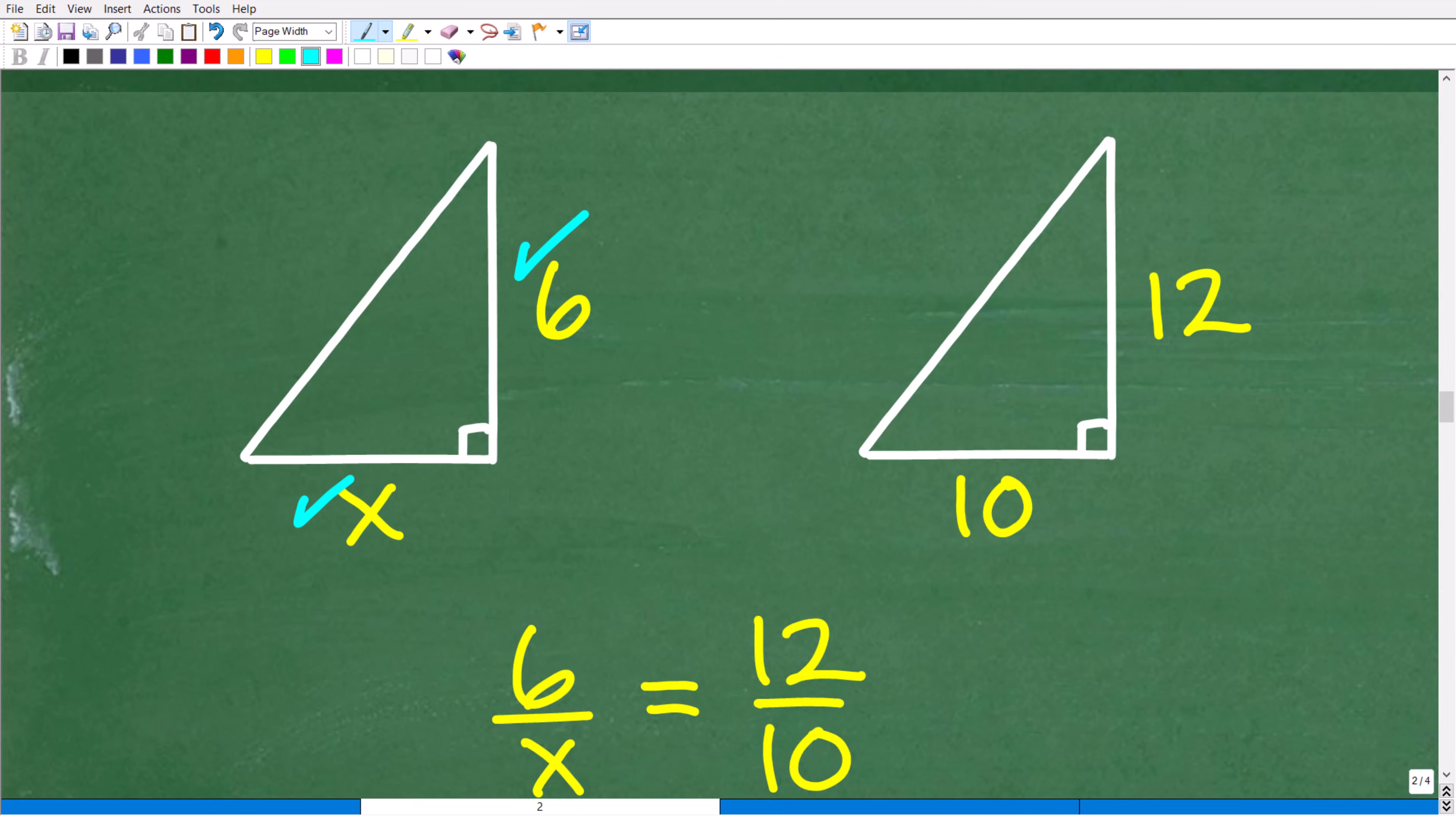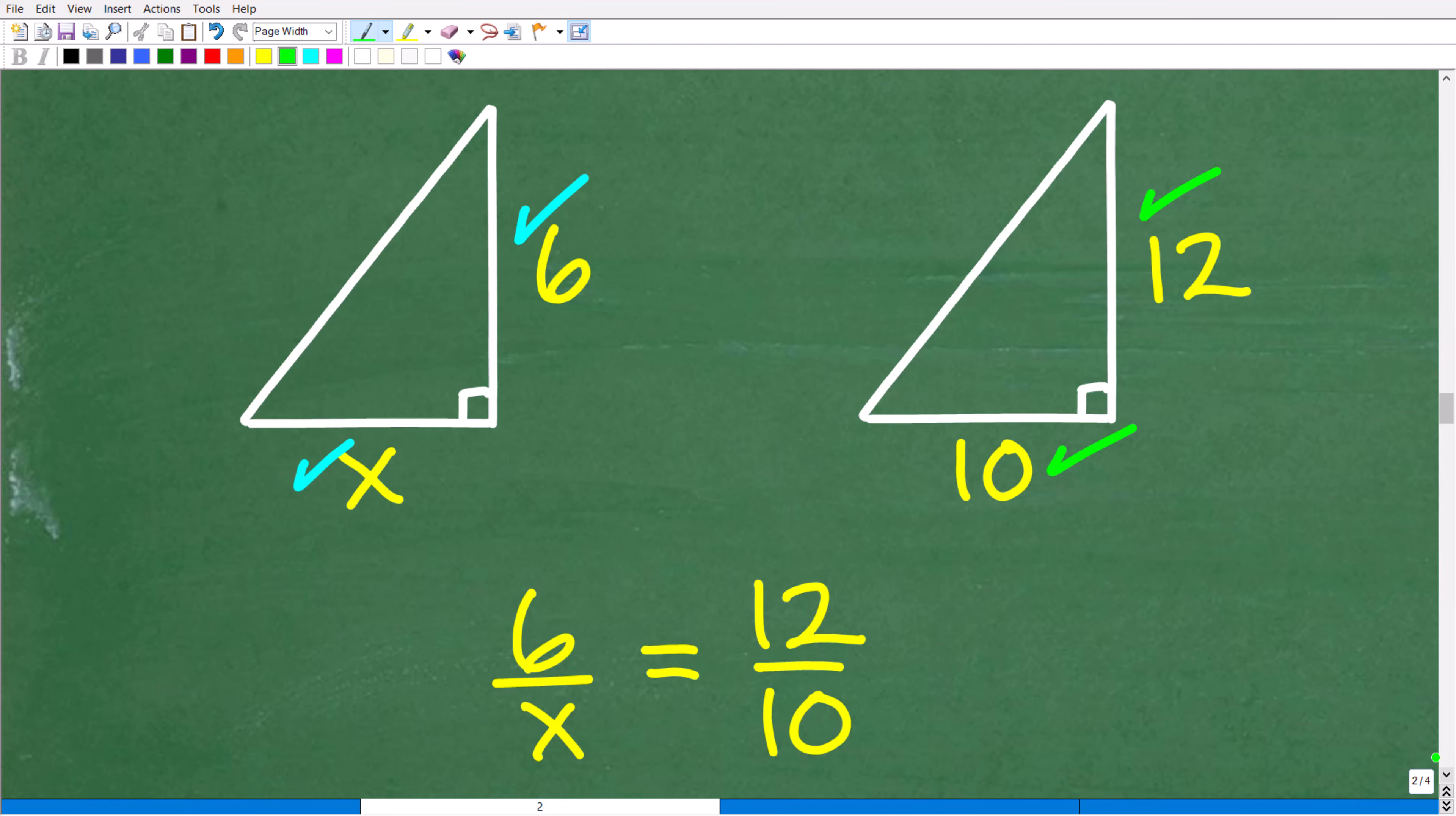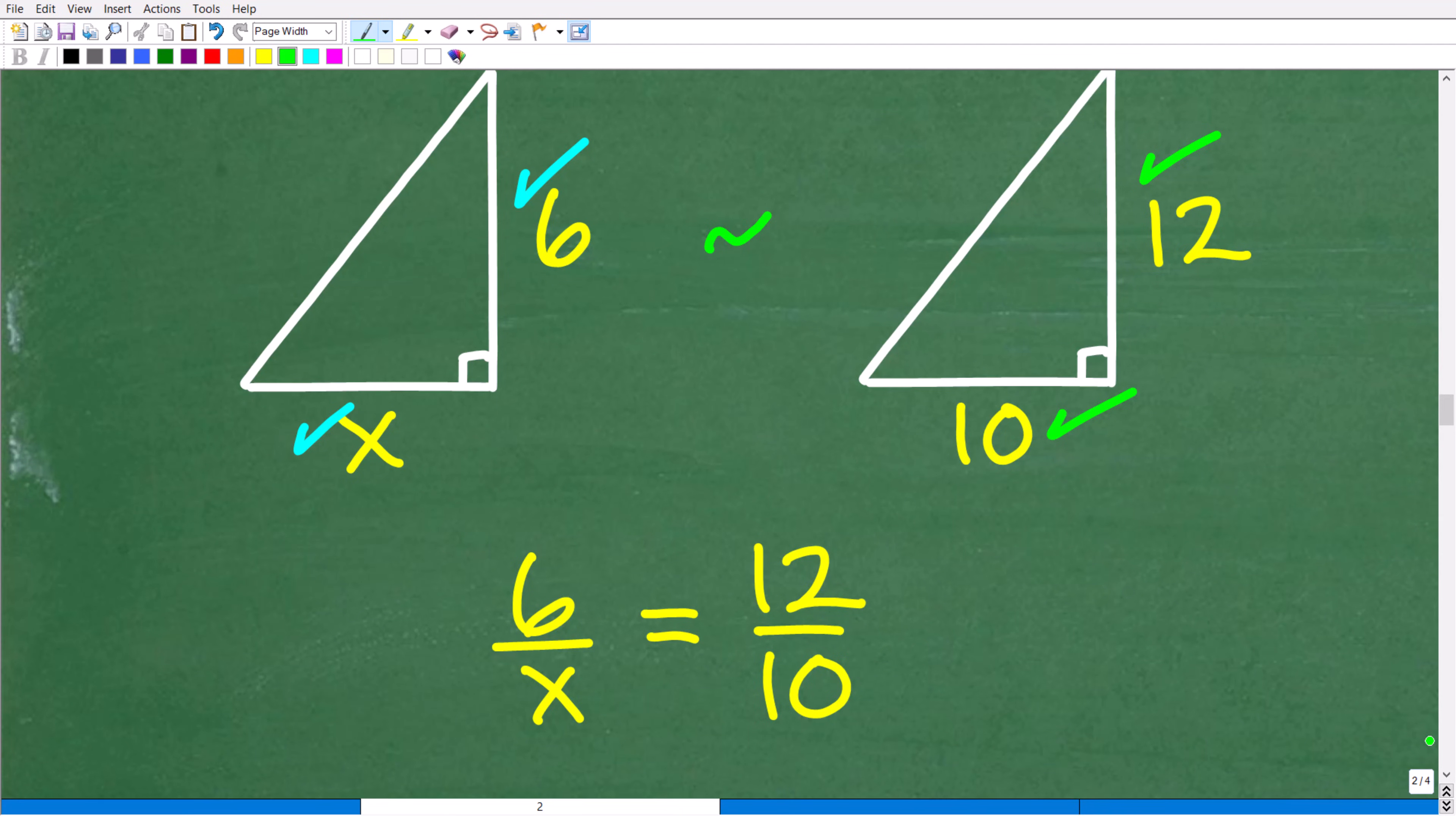So I'm going to take this side divided by this side, and whatever that answer is, it's going to be equal to this side divided by this side, and this is what we call a proportion in mathematics. Two equal fractions, and we use algebra and proportions to solve a ton of geometry problems. So right now, if you understand the setup, the algebra is going to be very easy.